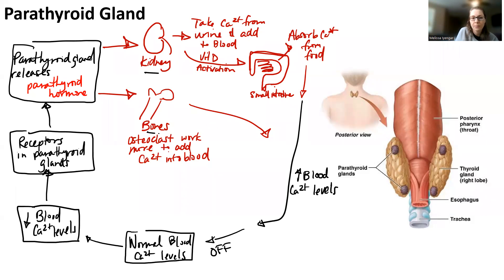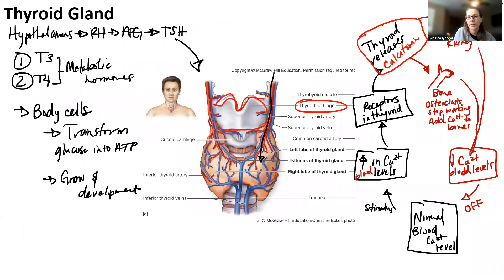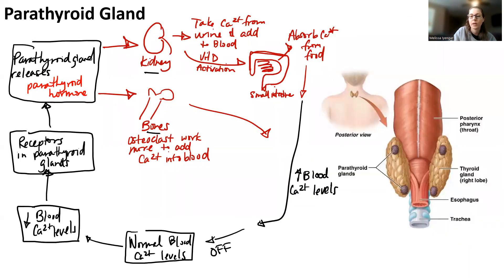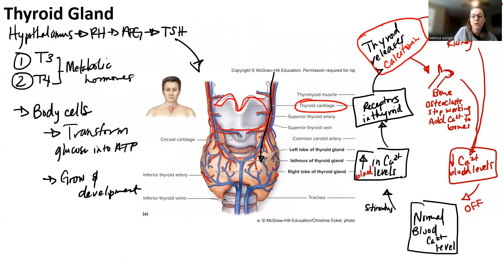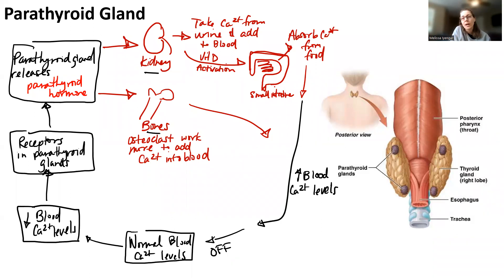Kidneys and bones are the targets here — the same two targets that were targets for calcitonin. It's just that now you're doing different effects. Here, you need to absorb calcium back into blood to increase blood calcium levels, whereas with calcitonin, you needed to dip calcium levels by putting calcium into bones or removing it from the blood via kidneys. Think about whether it's a waste product — if you have too much, it's a waste product; if you don't have enough, you want to steal it back and put it into blood.